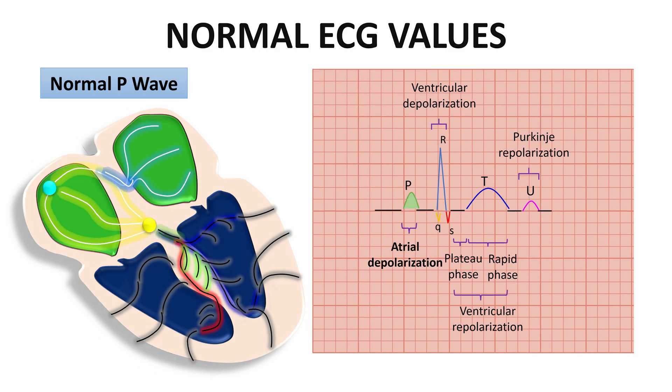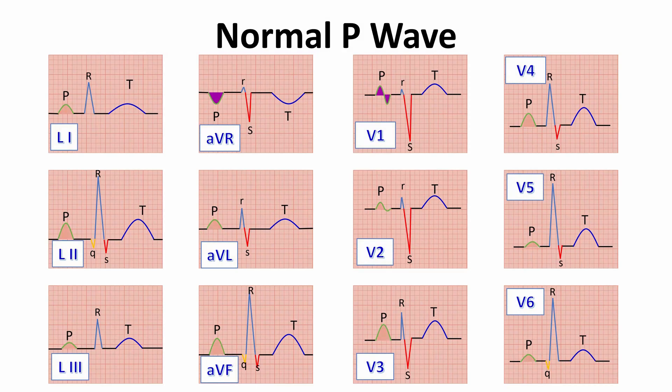The P wave is normally upright in most of the ECG leads with two exceptions. In lead AVR, it is inverted, and in lead V1 biphasic.